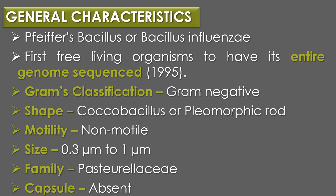Haemophilus influenzae has 1,830,140 base pairs of DNA and 1740 genes. Regarding Gram's classification, it is a Gram-negative bacteria, and its shape is coccobacillus or pleomorphic rods. It is non-motile in nature, and its size ranges from 0.3 micrometer to 1 micrometer. It belongs to the family Pasteurellaceae.